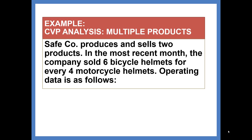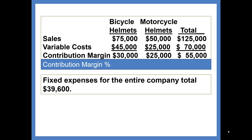Let's take a look at an example. Safeco produces and sells two products. In the most recent month, the company sold six bicycle helmets for every four motorcycle helmets. Sales total $125,000, with $75,000 from bicycle helmets and $50,000 from motorcycle helmets. Variable costs are $45,000 for bicycle helmets and $25,000 for motorcycle helmets, for a total of $70,000, giving us the resulting contribution margin. Fixed expenses for the entire company total $39,600.